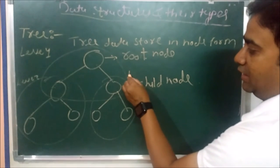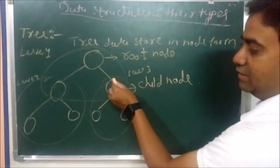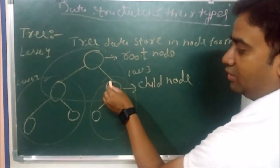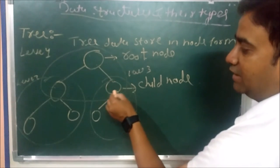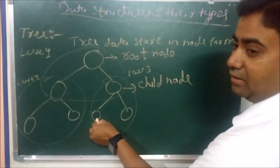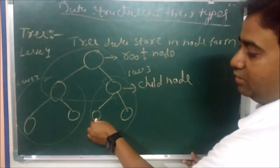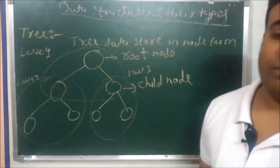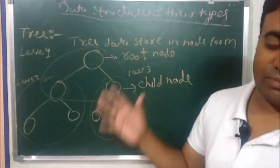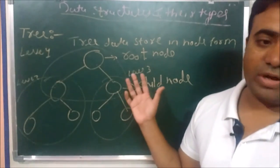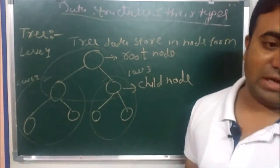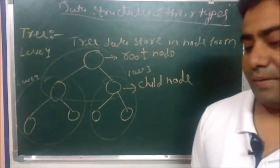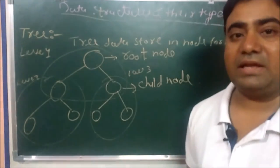Suppose a node has two child nodes — this becomes level 2 under the root node. A sub-tree can be made from any sub-node. The main node is the root node and its sub-nodes are child nodes. Every tree has a different level structure. This is a tree.